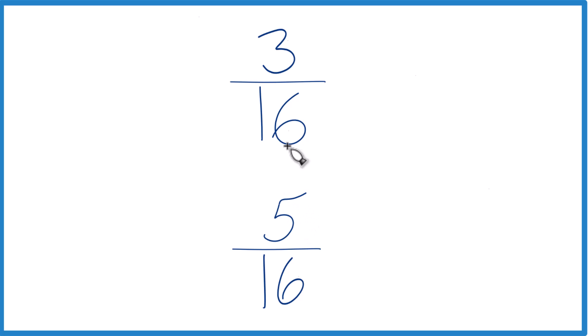So 5 is greater than 3. That means 5/16 is greater than 3/16. And we can tell by how much: 5 minus 3 is 2. So this is actually 2/16 greater. You can even reduce that down to 1/8. So 5/16 is actually 1/8 greater than 3/16.